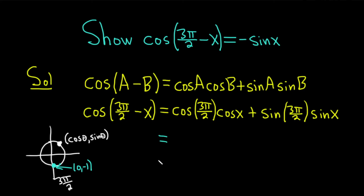So continuing on our problem, we have cosine of 3π/2. That's going to be the x coordinate there, so that's 0, times the cosine of x. Plus sine of 3π/2 is the y coordinate, so that's negative 1, times the sine of x. So 0 times cosine is 0, and then negative 1 times sine x is minus sine x. And 0 minus sine x is just minus sine x.